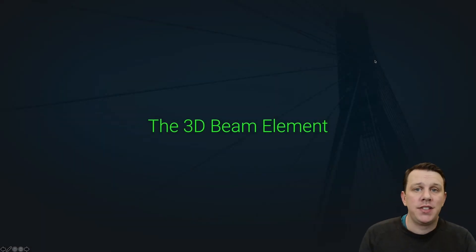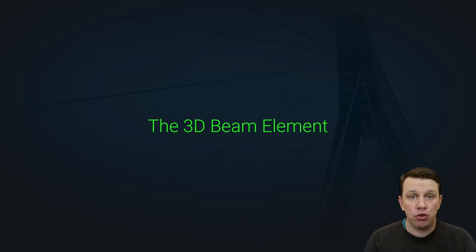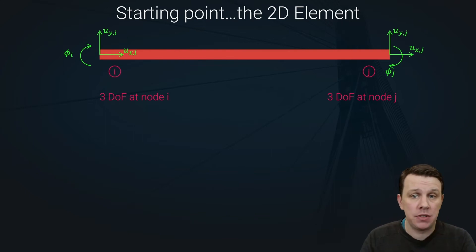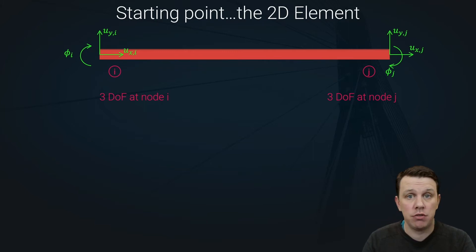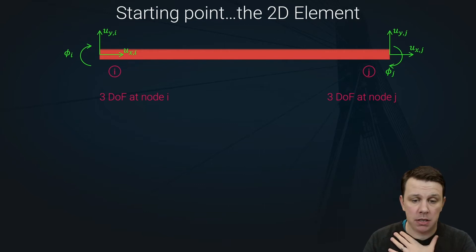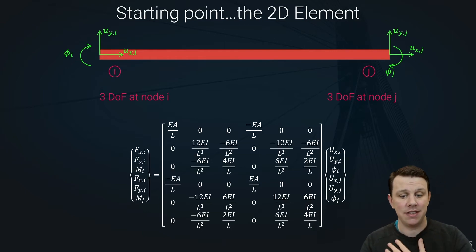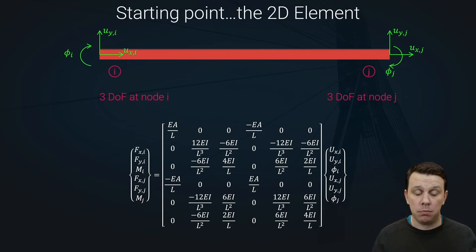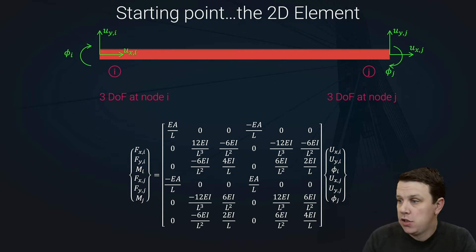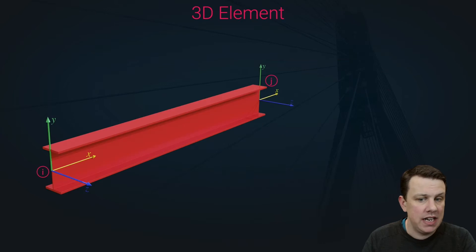In this lecture we're going to start thinking about the 3D beam stiffness matrix — the full 3D beam element. We start off with the 2D element from the last lecture: node i, node j, three degrees of freedom at each node, six degrees of freedom in total. That is the stiffness matrix — the force-displacement relationship we talked about previously.